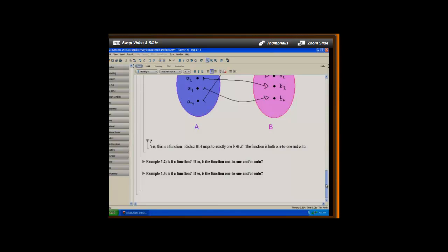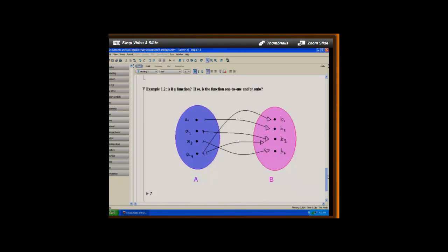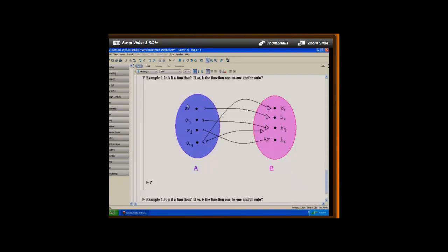For our second example, let's take a look at this diagram. And again, the first question is, is this a function? And we need to check, does every member of A map to exactly one place in B? And we see that works for A1, A2, and A3, but then it breaks down at A4. We see that A4 is assigned both to B1 and to B3. So in this case, it's not a function, it's just a relation. And there's no need to check one to one or onto because it's not even a function.